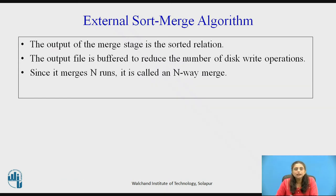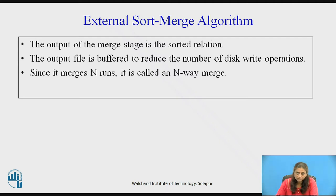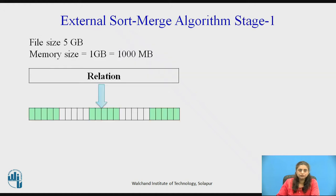The output of this process is of course a sorted relation. The output is buffered to reduce the number of disk accesses and write operations. Since it is merging N runs, it is called an N-way merge.